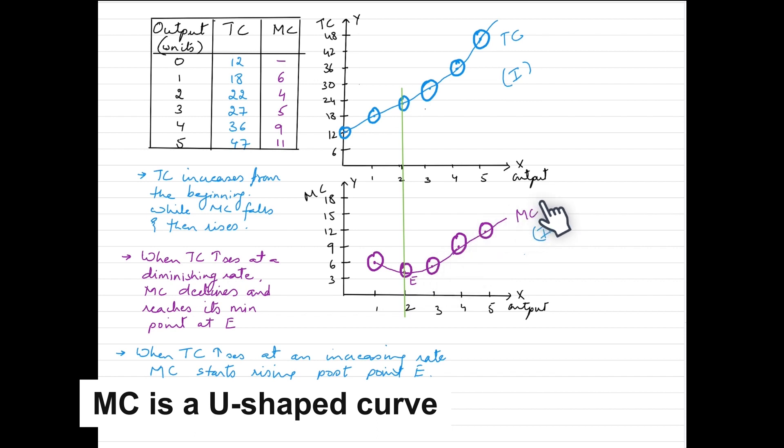When we see that the total cost is increasing at a diminishing rate, which is basically these segments, we see that the marginal cost is declining as well. Numerically and visually, this is very much evident. Total cost is rising, however marginal cost tends to fall.